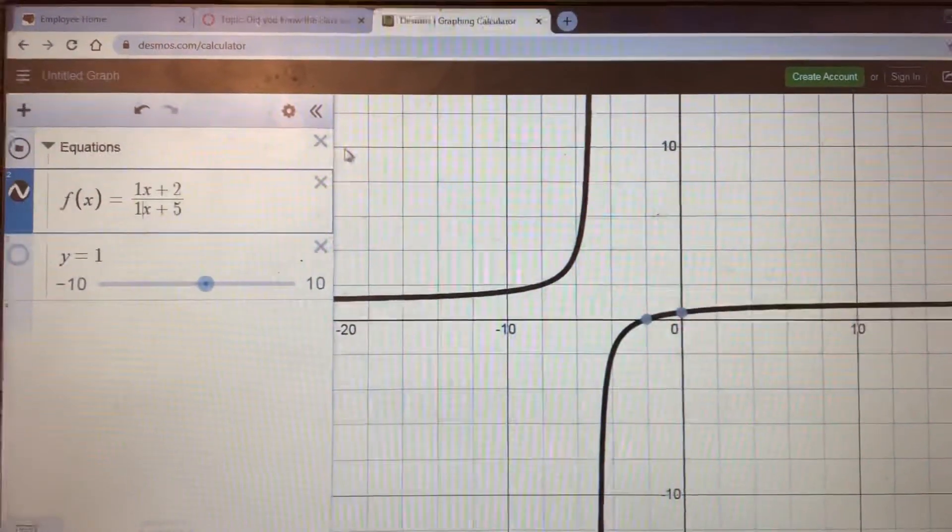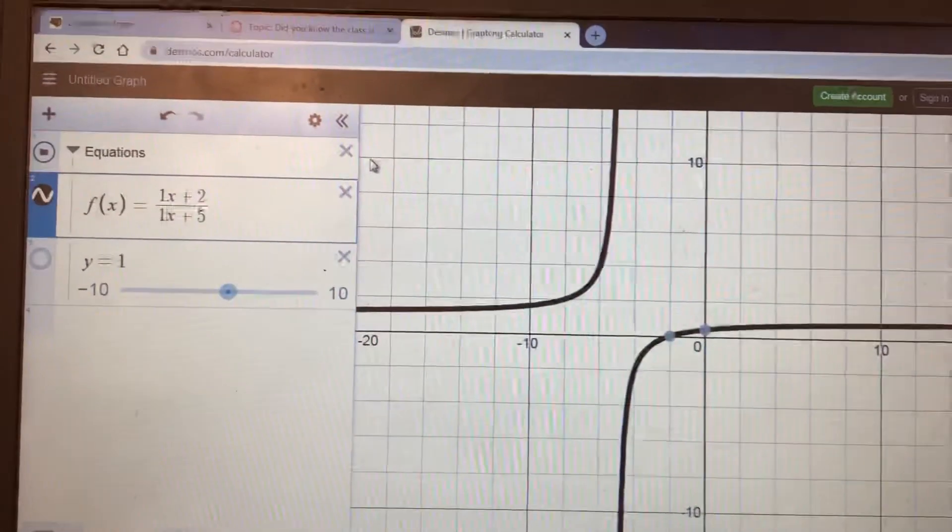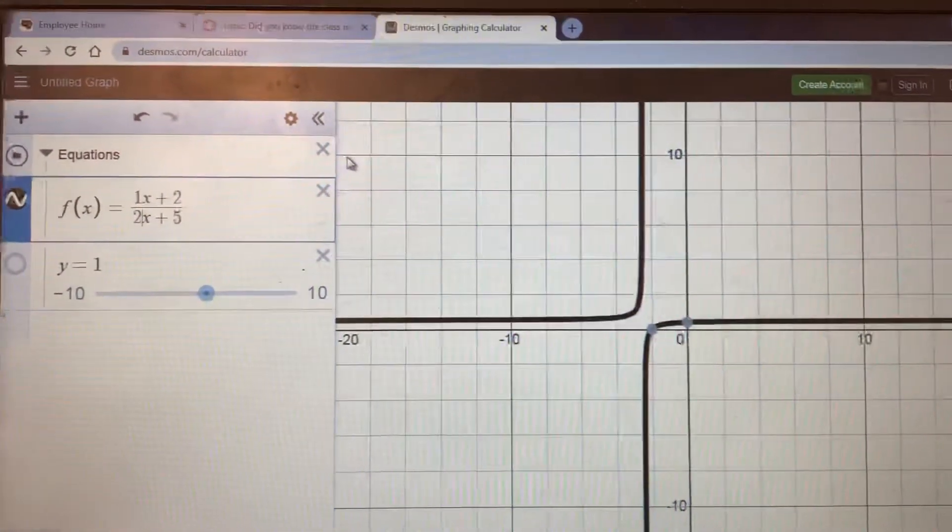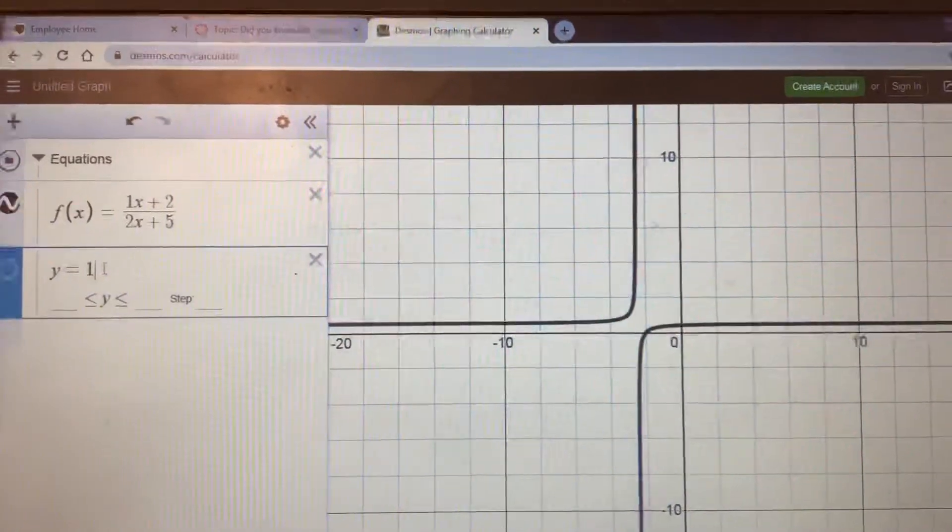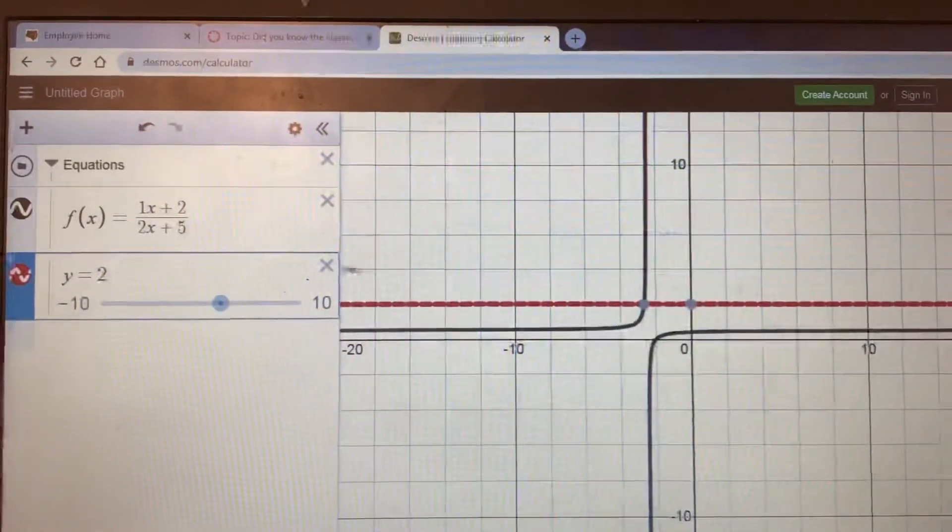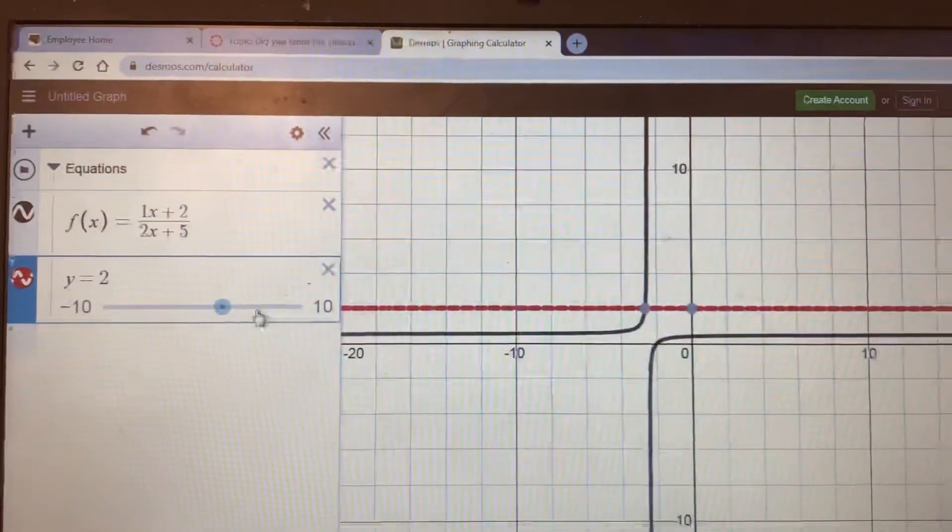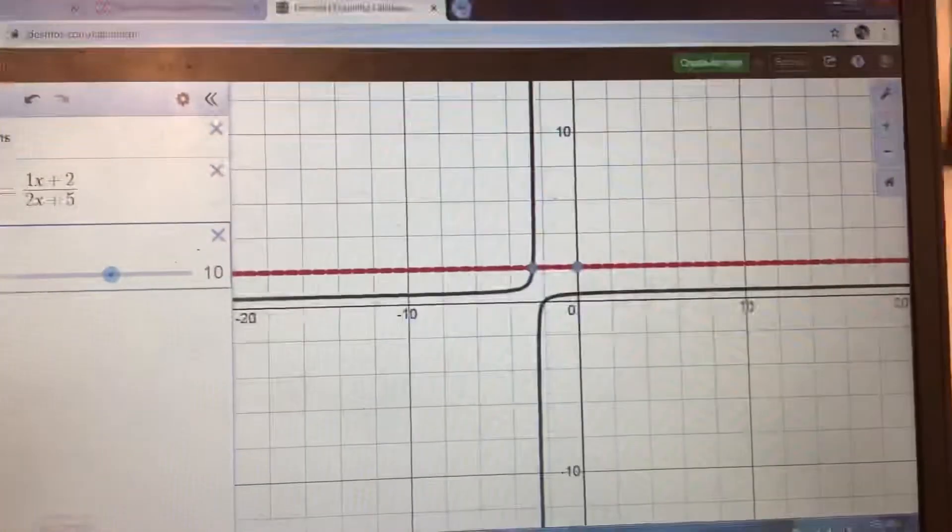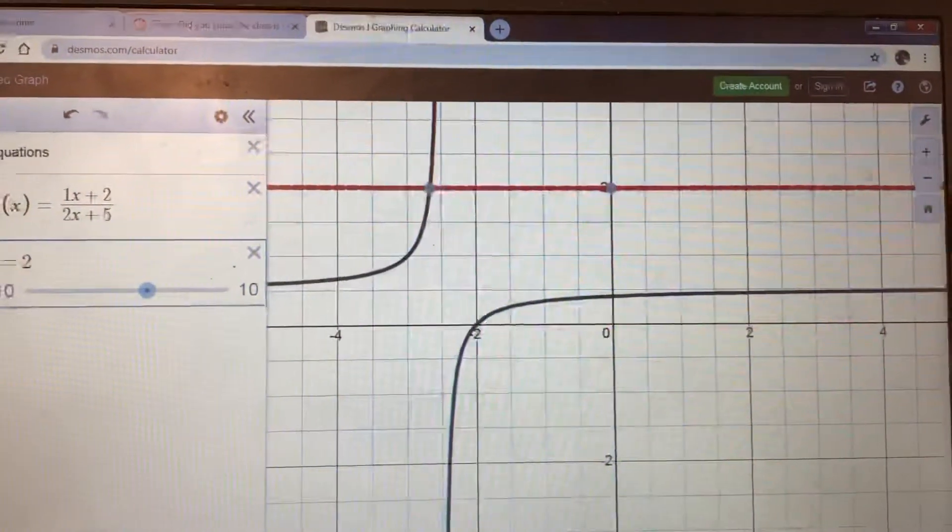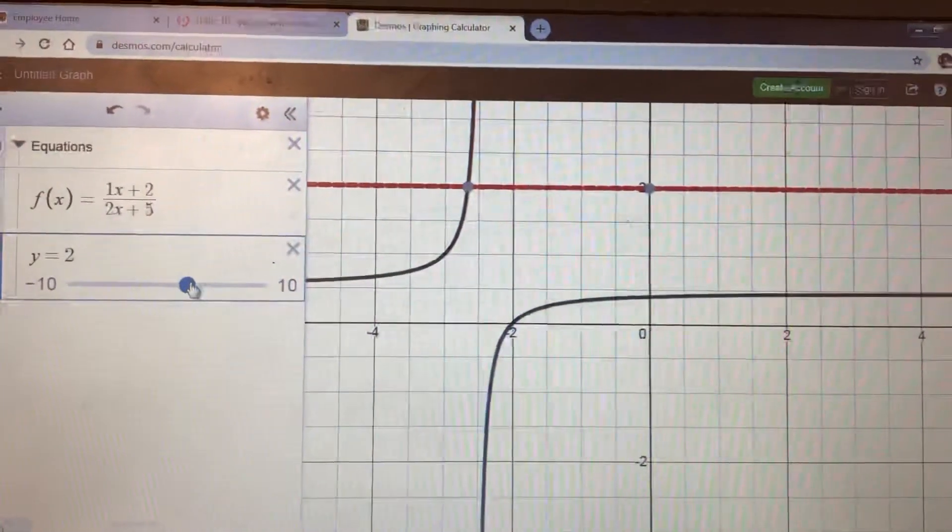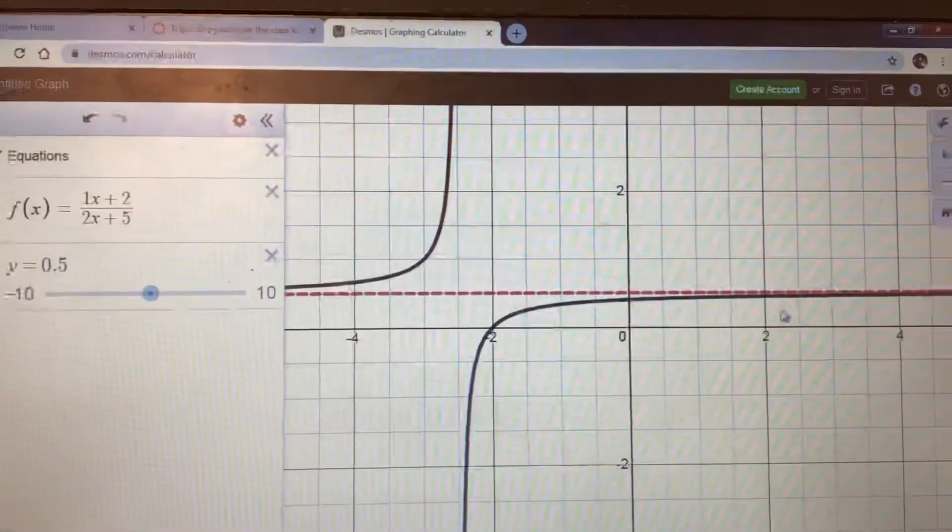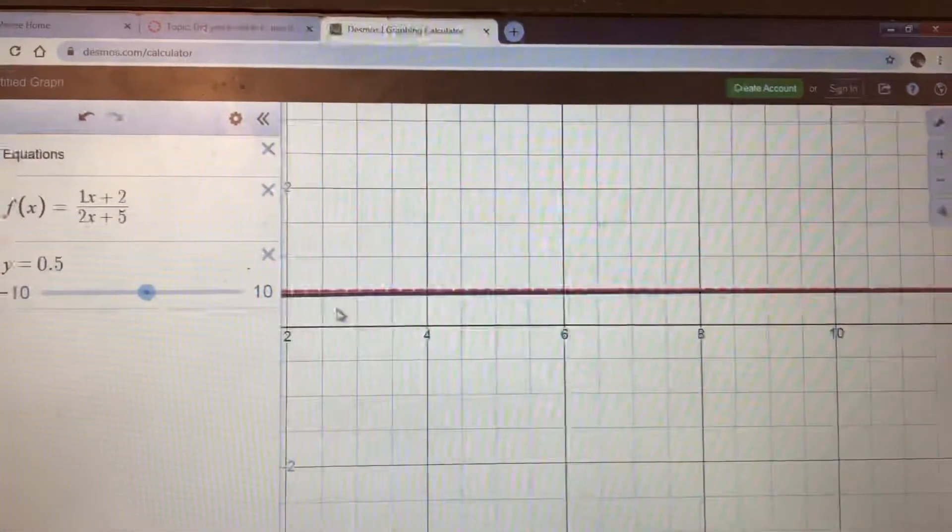For example, let's say that you claim that the horizontal asymptote is this number on the bottom - it says 1x. So let's change that to a 2. What would you think the horizontal asymptote would be now? Y equals 2? Well, let's turn it on and see. Oh no, that's too high. It's lower. Let's drag it down until it's the correct horizontal asymptote.